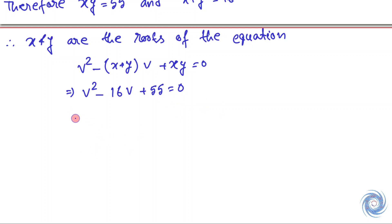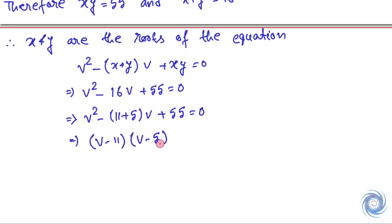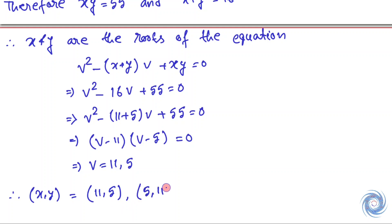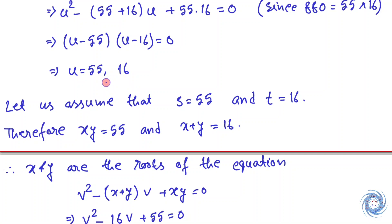Solving v² - 16v + 55 = 0, we get v = 11 or v = 5. So we have two possible solutions: one is x = 11 and y = 5, and the second solution is x = 5 and y = 11.